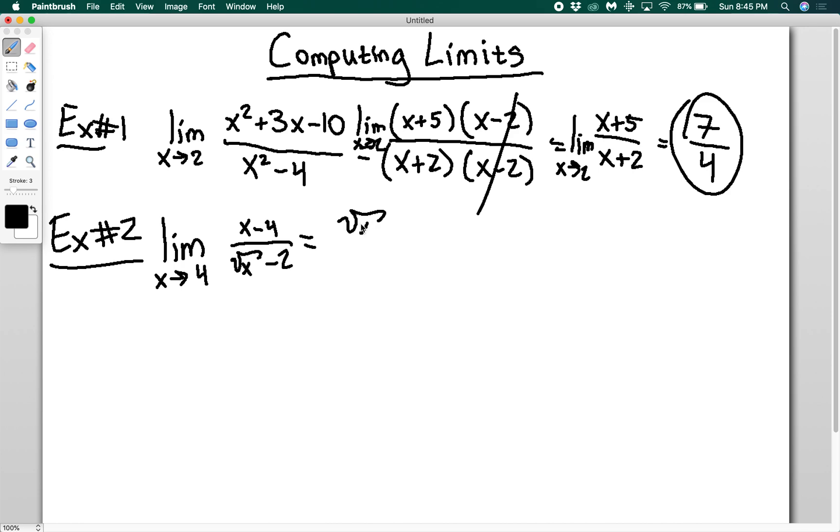What I'm going to do is factor the top. I get square root of x plus 2 times square root of x minus 2 divided by the square root of x minus 2. Now these will go away and I'm left with the square root of x plus 2.